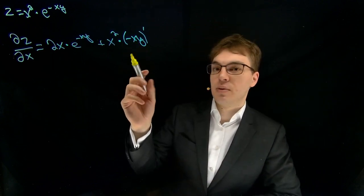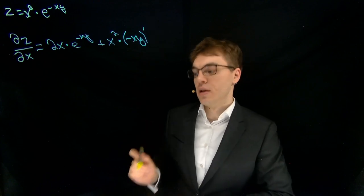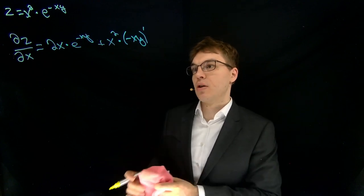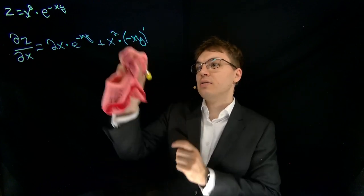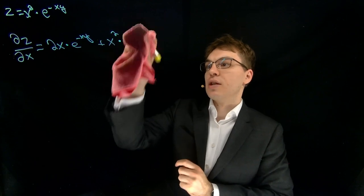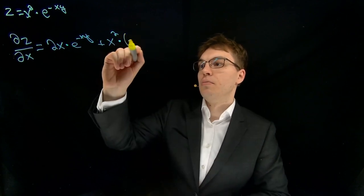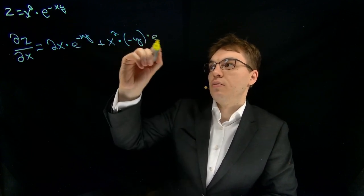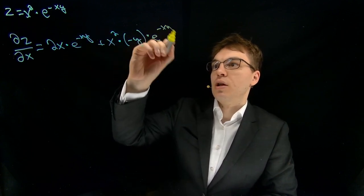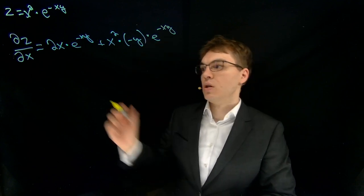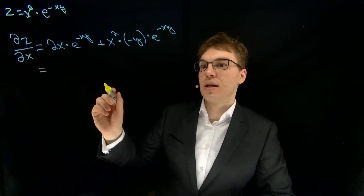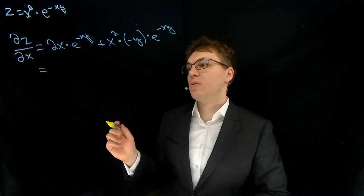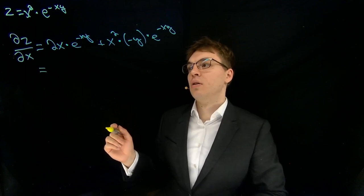Keep in mind we are doing partial derivatives. So the y is kept as a constant. So what we get here for this part is just minus y. And then we multiply this with the unaltered exponential. So let's quickly get the results. Can we simplify something?